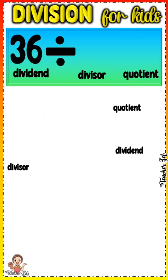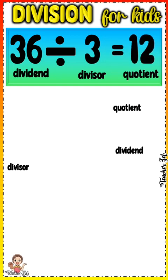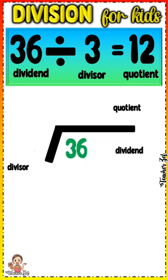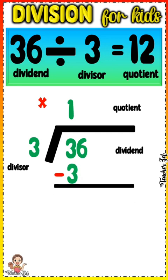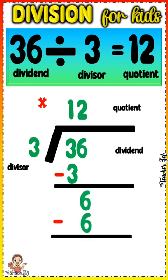36 divided by 3 equals 12. 6 divided by 3 equals 1. 1 times 3 equals 3. 3 minus 3 equals 0. Bring down 6. 6 divided by 3 equals 2. 2 times 3 equals 6. 6 minus 6 equals 0.